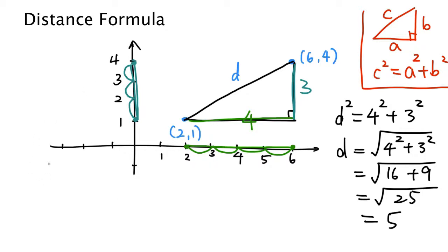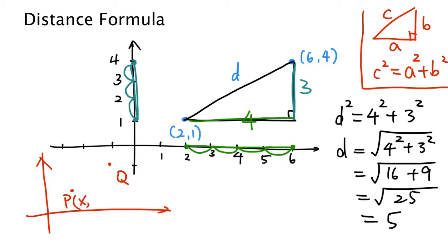Now let's think about this other situation. Here is another coordinate plane and there are two points — let's say P and Q. Let's suppose P has coordinates x1 and y1, and Q has coordinates x2 and y2. We want to find the distance between these two points. The coordinates are not numbers, they are variables. So if we figure out how to express D in terms of these x's and y's, that's going to be the formula.